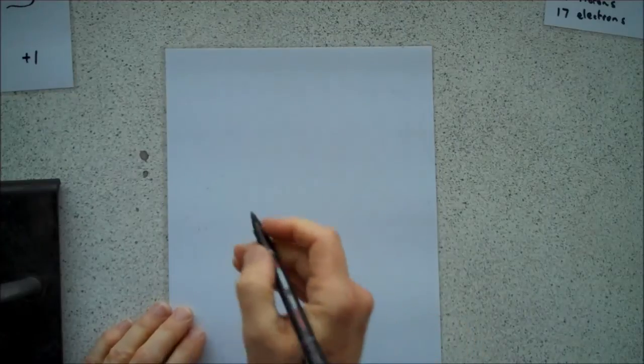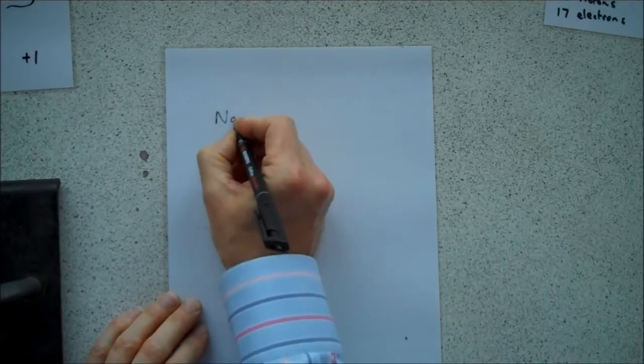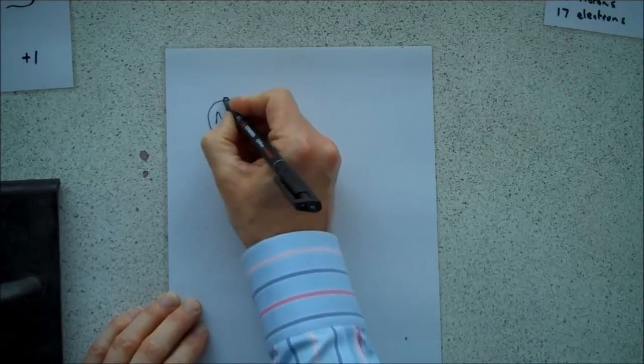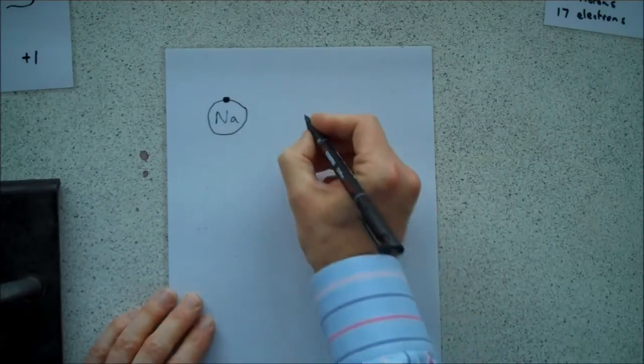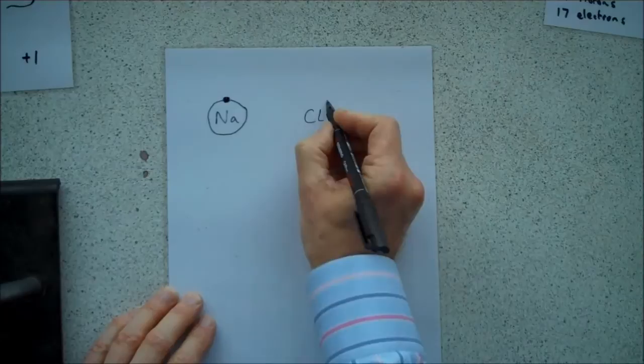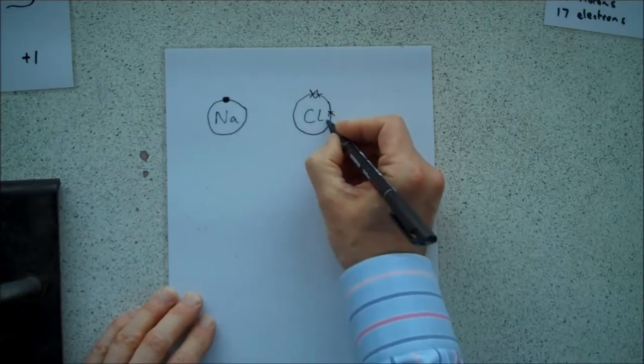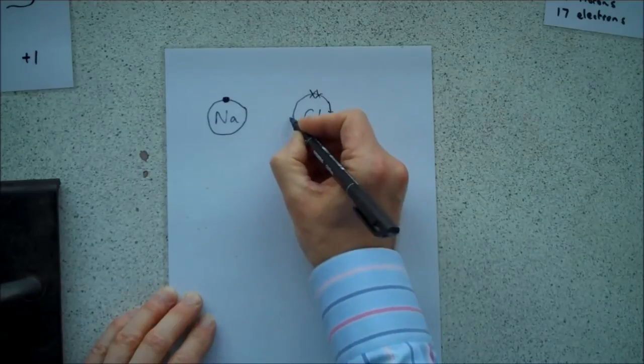Now, in an exam situation, you won't want to draw every single electron in an atom of chlorine, so you can just focus on the outermost shells. In the case of sodium, then, we'll just draw a sodium atom, we'll put a ring around it, and we'll just give it one electron in its outer shell. And we'll draw a chlorine atom, and we'll just show its outer shell with seven electrons.